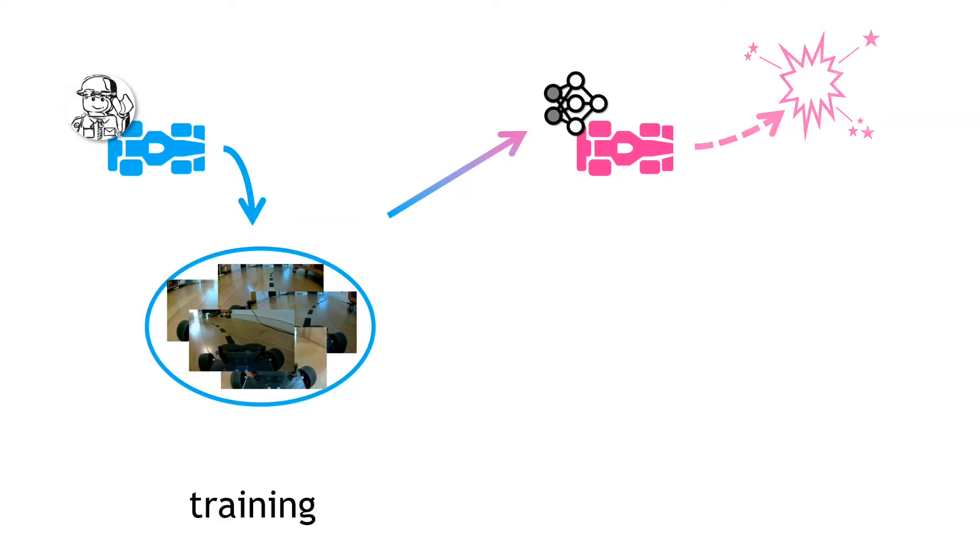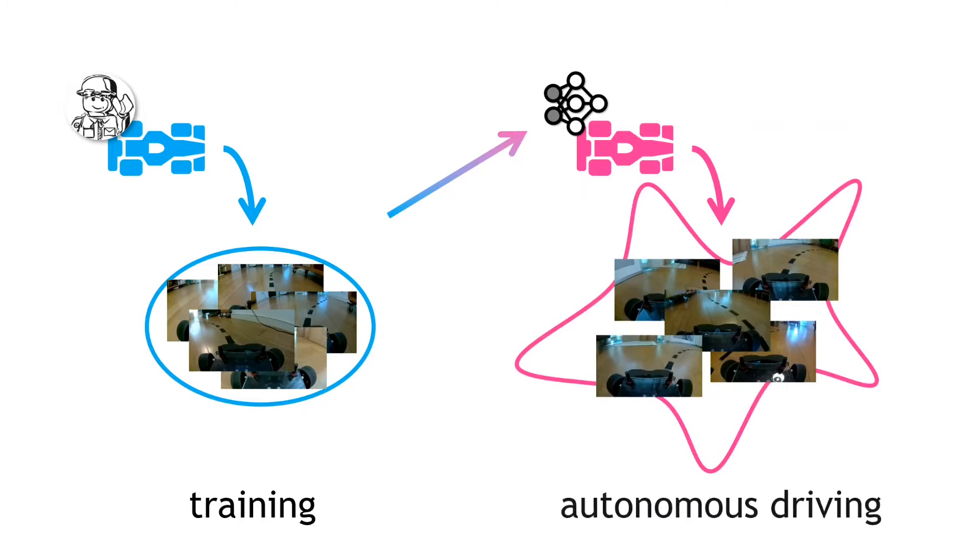The problems with behavior cloning are well known. The autonomous driver typically doesn't end up driving much like it was instructed to. The overall result being that the images encountered during training and those seen during the autonomous drive can differ significantly.